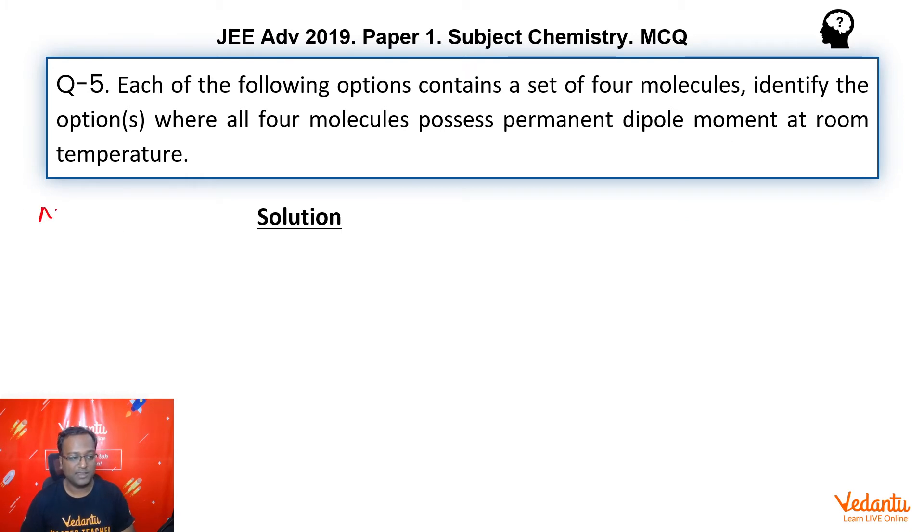First one we had was NO2. So, NO2 structure would be N double bond O, coordinate bond O and 1, 2, 3, 4 and we have odd electrons. So, your mu net will not be equal to zero.